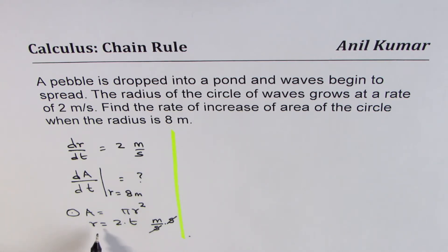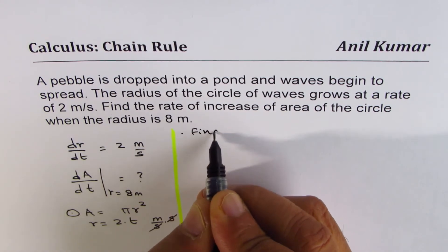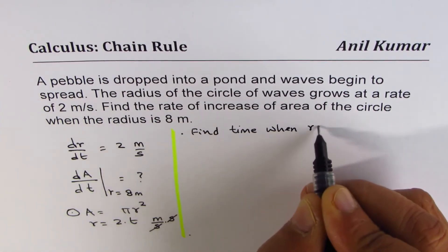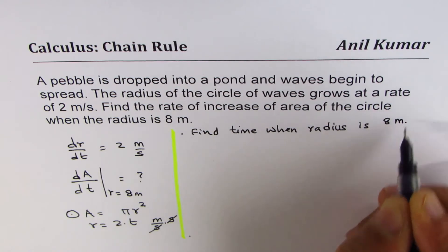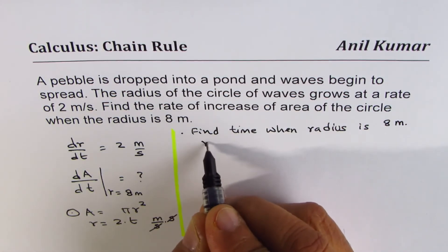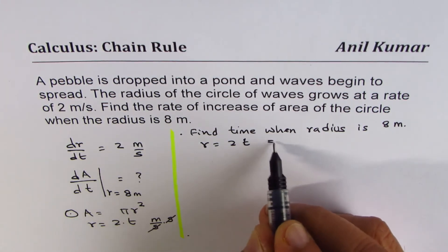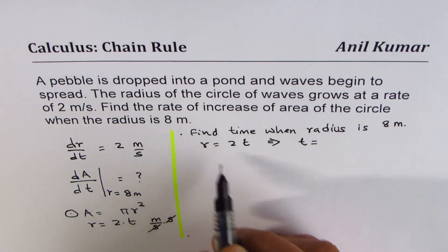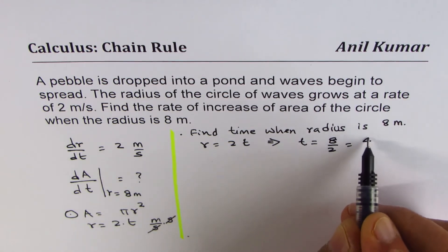So the first step should be to find the time when the radius is 8 meters. So first step is find time when radius is 8 meters. So we can use this relation, r equals 2 times t. So from here, we can find what time is. So time is equal to, radius is 8, so 8 divided by 2, which is 4 seconds.